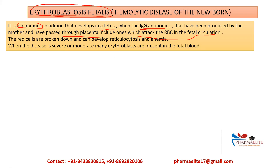This disease is mainly due to RH incompatibility. If the mother is RH negative and the fetus is RH positive, during pregnancy there is very little interaction between fetal and maternal blood due to the placental barrier. However, during delivery there are chances of leakage of fetal blood — containing the RH antigen — into the mother's blood. That is why the first pregnancy is usually not affected; the first child is not affected.